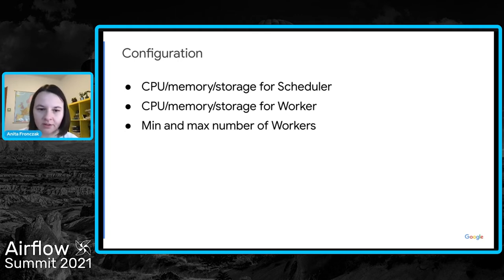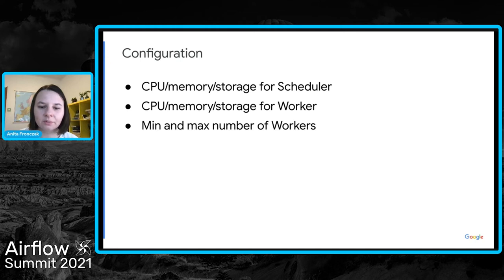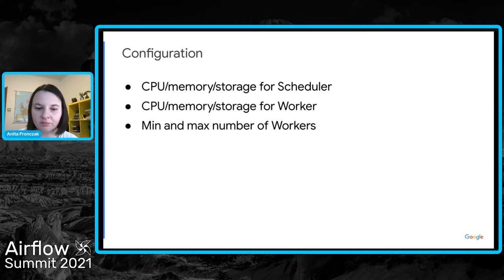This is how you configure Cloud Composer auto scaling. You can change machine settings for worker and scheduler separately, and they can be changed after the environment has been created to better match your load. You can set a minimum number of workers to always have some capacity when tasks arrive. To cap costs, use the max number of workers setting. To disable auto scaling, simply set minimum workers equal to maximum workers.